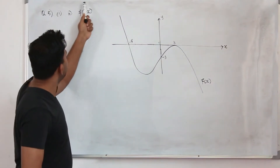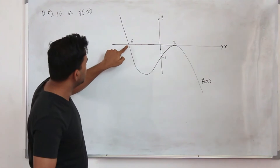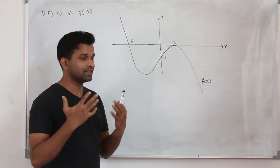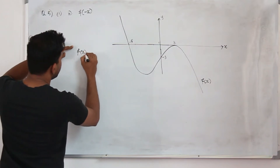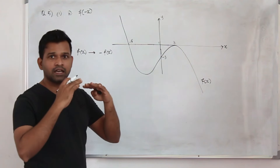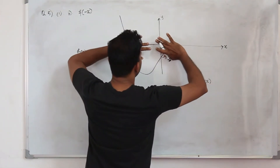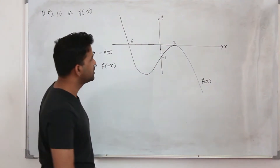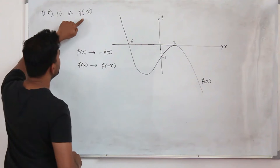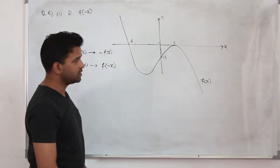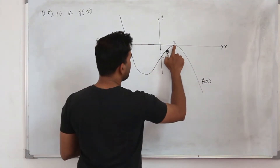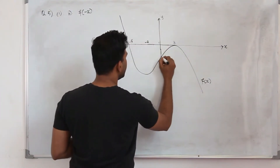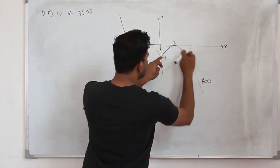In part B, they want you to sketch f of minus x. You are given f of x and the points of intersection with the coordinate axis. We need to find f of minus x. If you learn the transformations clearly: if you are given a function f of x, then minus f of x will be a reflection of the actual graph over the x-axis — you need to flip the graph over the x-axis. If you replace x by minus x, you have to flip the graph over the y-axis. So we need to sketch f of minus x — we are going to flip the graph over the y-axis. When you flip the graph, your point 2 will be transformed to minus 2.